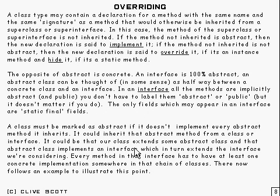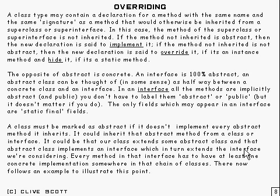For example, we could have some sort of class that extends an abstract class, and that abstract class implements an interface, and that interface in turn extends some other interface. Now every method in that interface at the end of that list has to have at least one concrete implementation somewhere in that chain of classes. And I'm going to illustrate that.